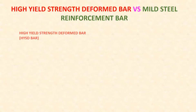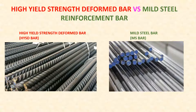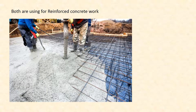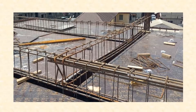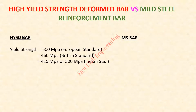Comparing high yield strength deformed bar with mild steel reinforcement bar: both are used for reinforced concrete work. The yield strength of high yield strength deformed bar is 460 MPa in British standard, 415 MPa in Europe, and 415 or 500 MPa in India. The yield strength of mild steel is 250 MPa.